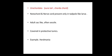Next is Urochordata. 'Uro' means tail, 'chorda' means cord. The presence of notochord and nerve cord is present only in the tadpole-like larva. In the adult, the nerve cord and notochord are absent; the adult is sac-like and often solitary. This is an example of retrogressive metamorphosis — advanced characters are seen in the developing larva but are absent in the adult.